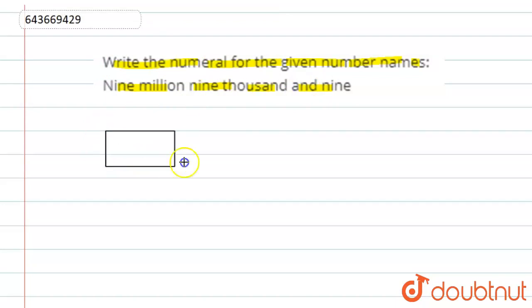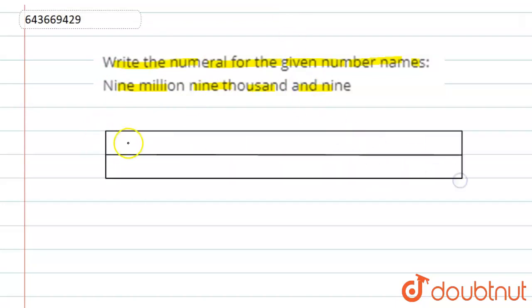Now we make a table in international system. This is million, this is thousand, this is unit. This will be divided into three parts.